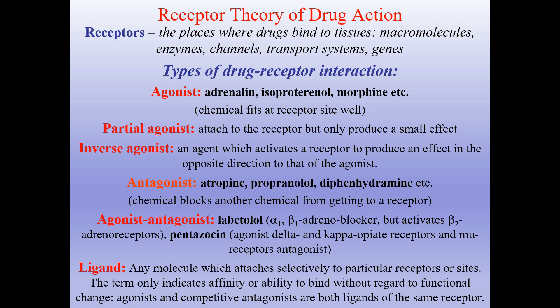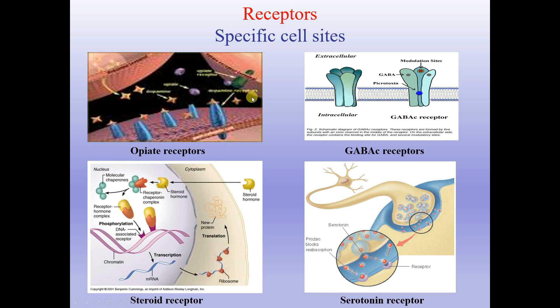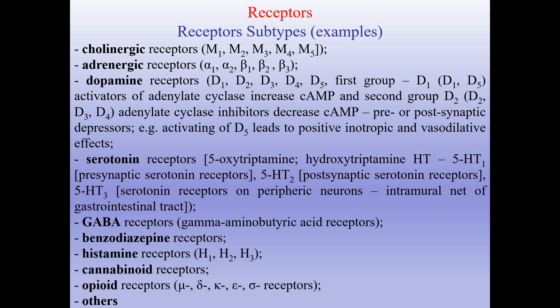On this slide you can see some specific cell receptor sites, for example opiate receptors, steroid receptors, serotonin receptors, and GABA receptors. Classification of receptors — examples of subtypes: cholinergic receptors M1–M5; adrenergic receptors alpha-1, alpha-2, beta-1, beta-2, beta-3; dopamine receptors D1–D5; serotonin receptors; GABA receptors; benzodiazepine receptors; histamine receptors; cannabinoid receptors; opioid receptors, and others.